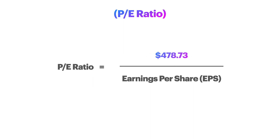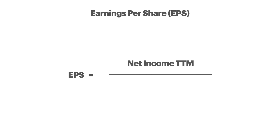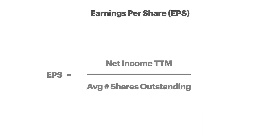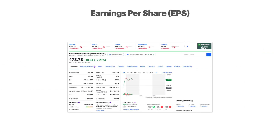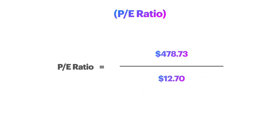Now let's find Costco's earnings per share. To calculate it, you take Costco's net income from the last 12 months and divide it by the average number of shares outstanding during that time. Or you can head back to your financial website of choice and pull it directly. Once we plug our EPS number into the equation, we have our final ratio to calculate Costco's P/E, which is 37.7.